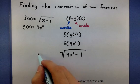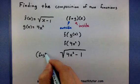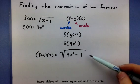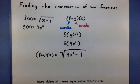So this expression now represents my composition. This is f of g of x. Now, sometimes you can even take this a little bit further and simplify it. But this particular one, it's as simple as it gets. So there you have it.